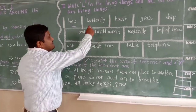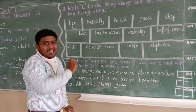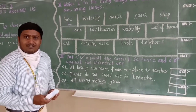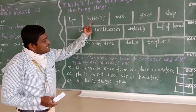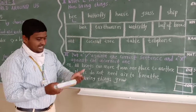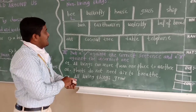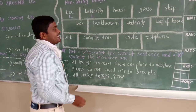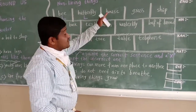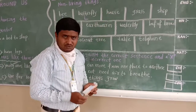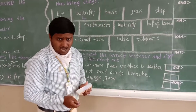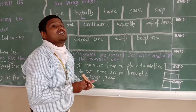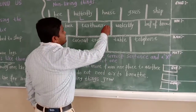Next one: butterfly. Butterfly is one type of insect, so this is living things. I write it here: living things. Next: house. Is house a living thing? No, this is non-living things.